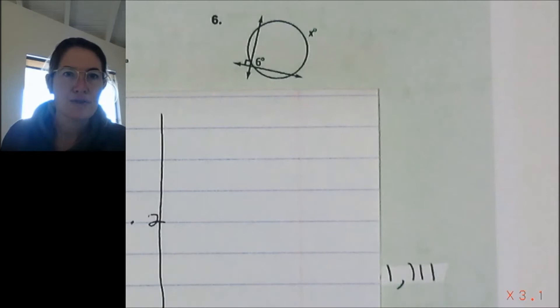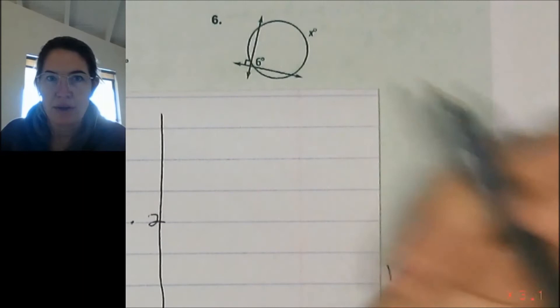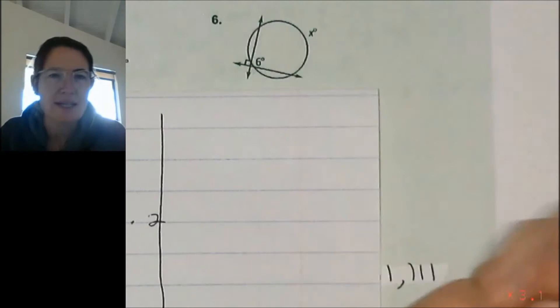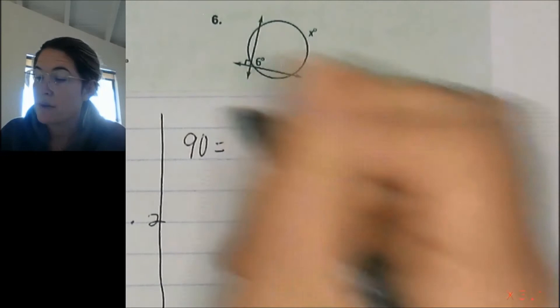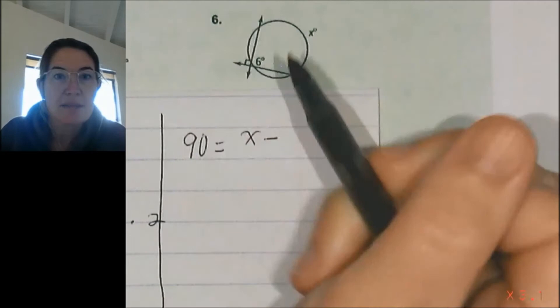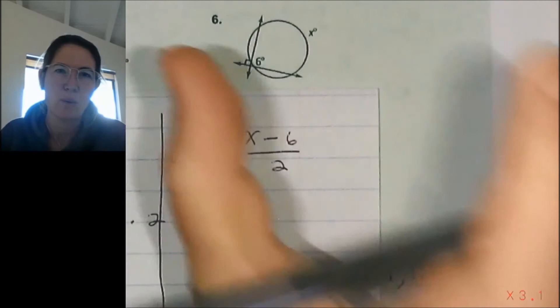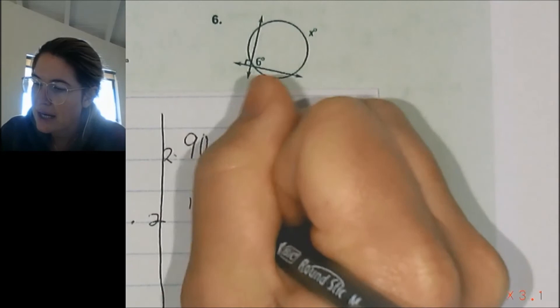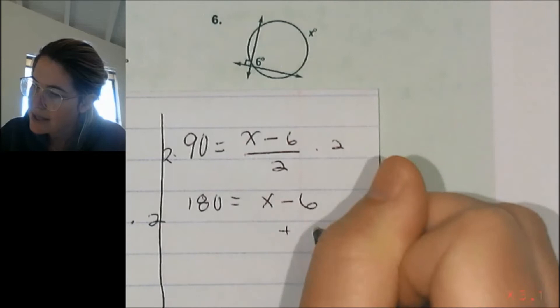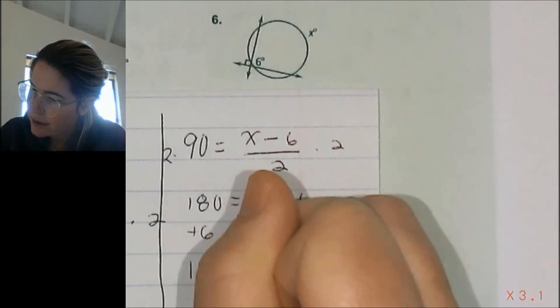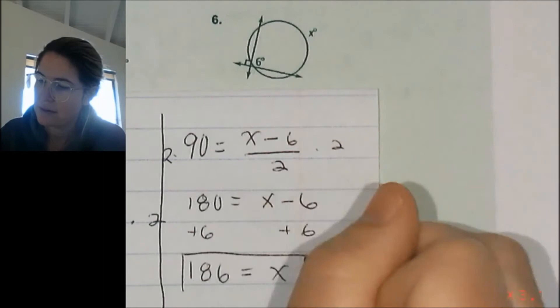Number 6 looks tricky and the angle is hard to see, but basically you have a 90-degree angle. So the angle formed — because that's 90 — means two lines are technically intersecting outside, although it's hard to see. So the angle formed equals the big arc x minus the small arc 6, divided by 2. Multiply by 2 on both sides: 180 equals x minus 6. Add 6 to both sides, and our missing arc is 186 degrees.